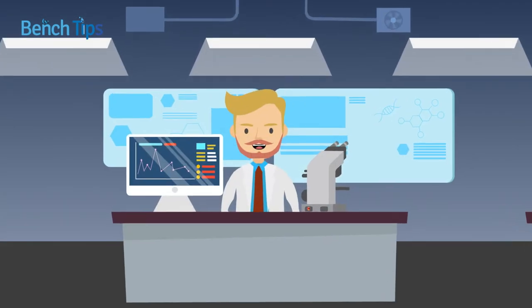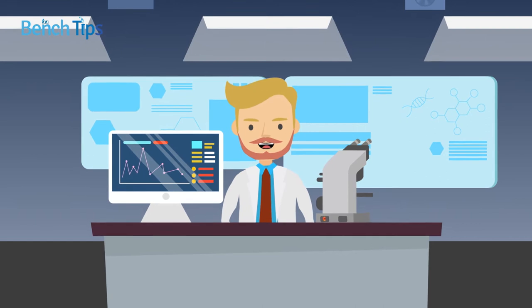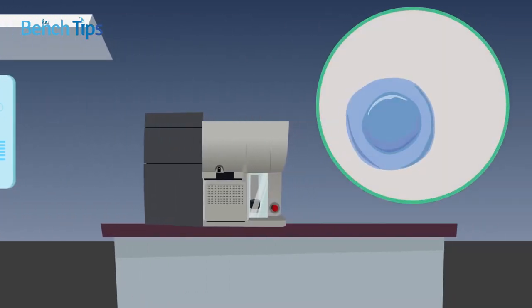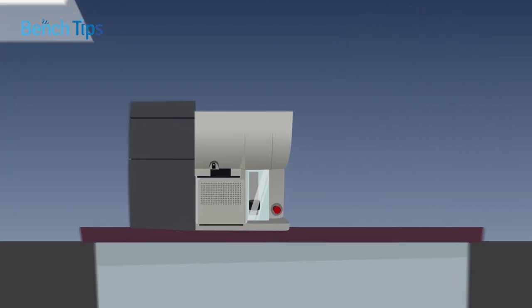For decades, biologists have used flow cytometry based cell sorting to isolate cells from complex samples like blood or serum. This involves labeling the cells of interest with antibodies before introducing them, along with any unlabeled cells, into a cell sorter via a nozzle.